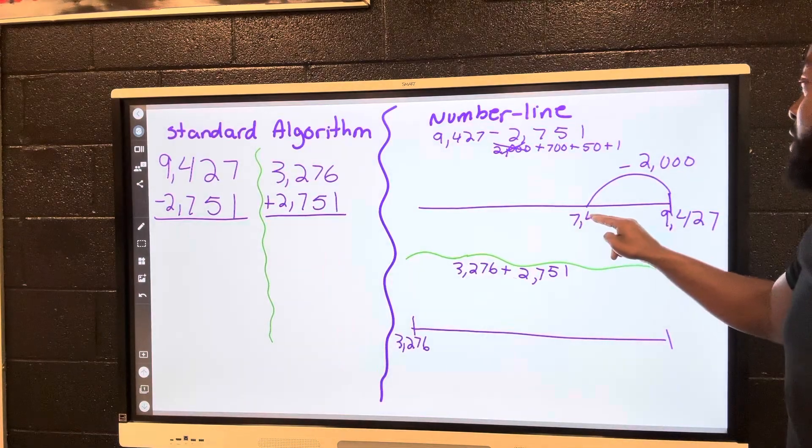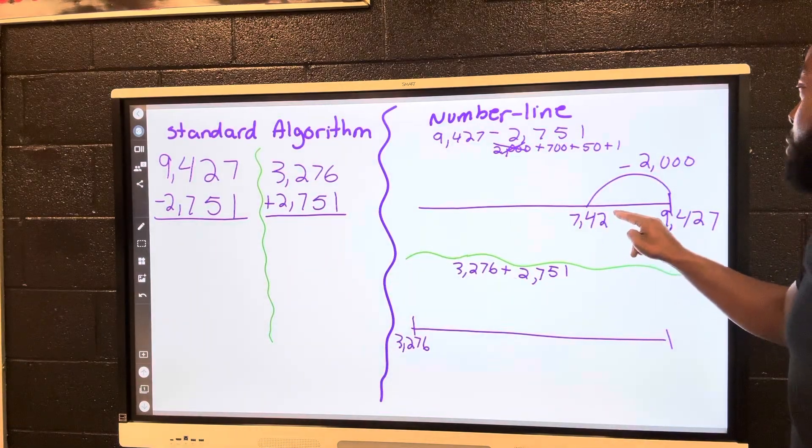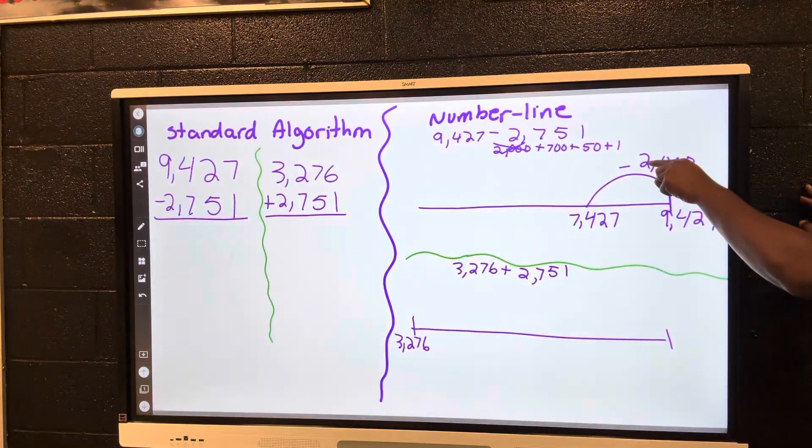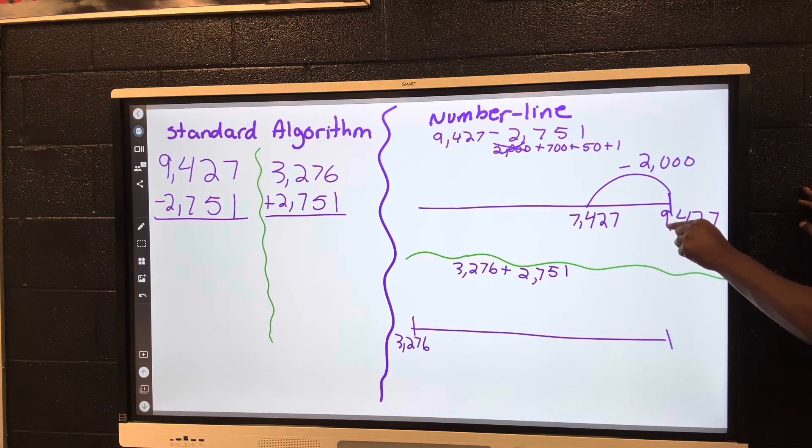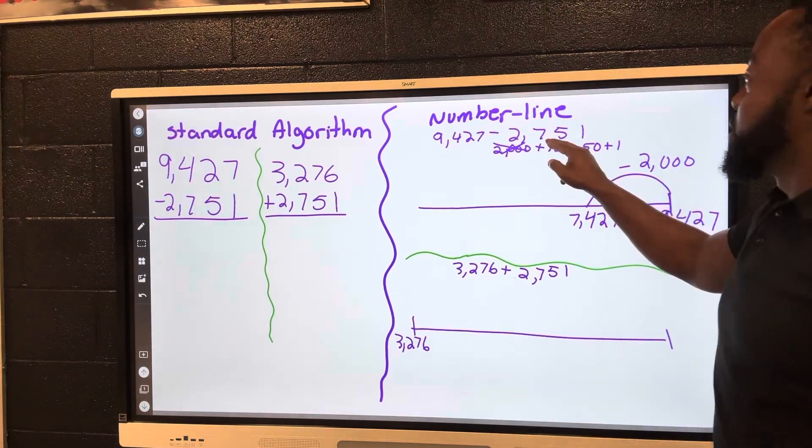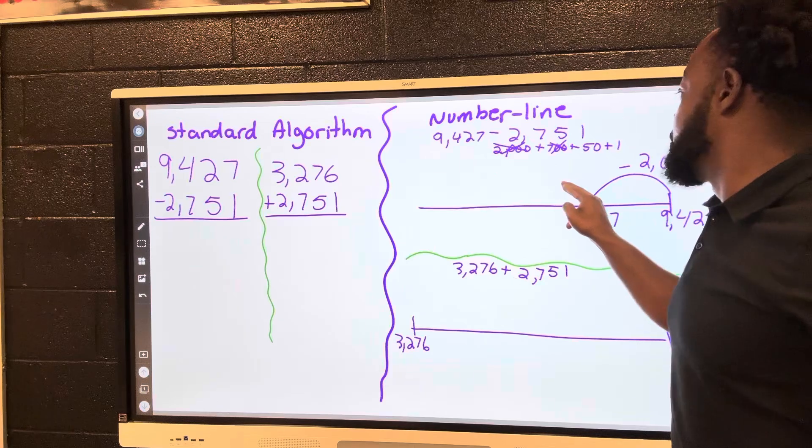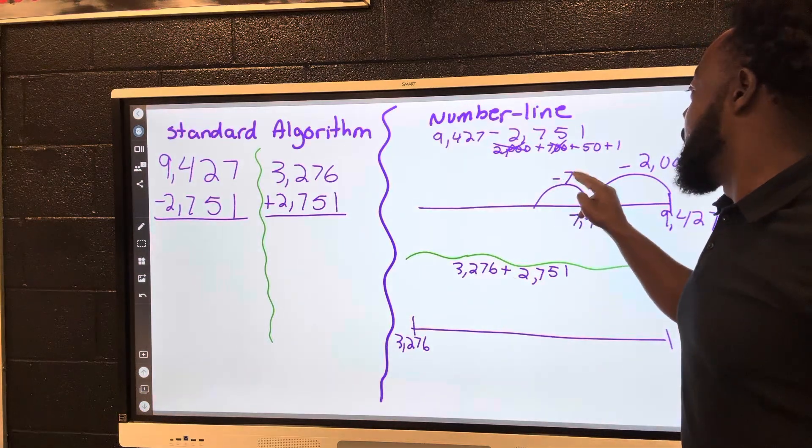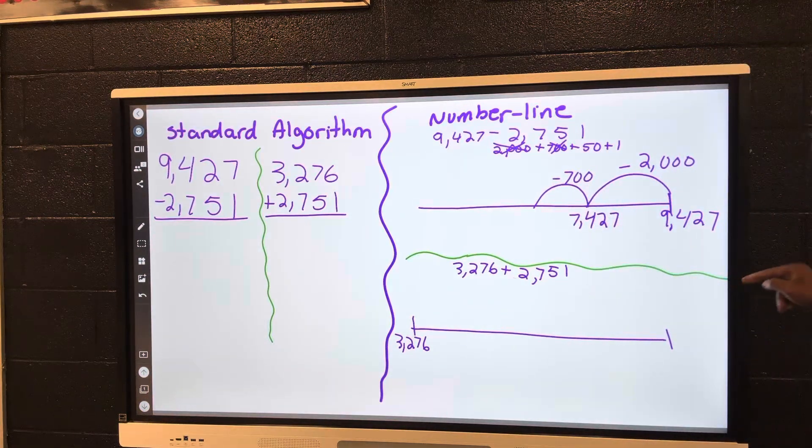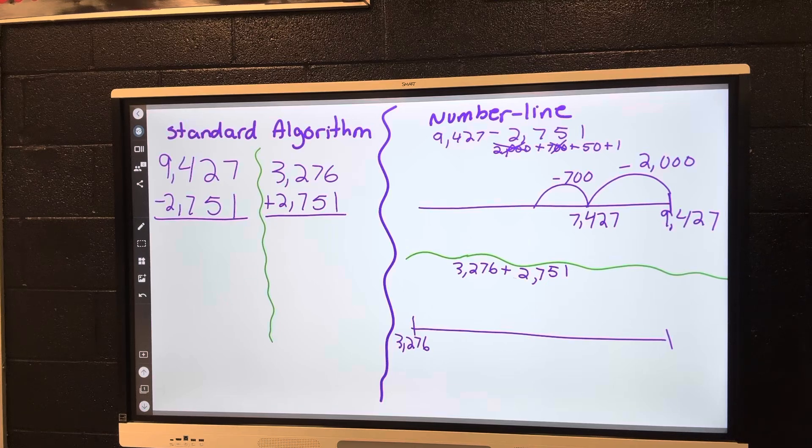Next up, 700. Let's loop over, make our minus 700. This could be a little tricky because we're going to have to go down a thousand too, but let me show you.